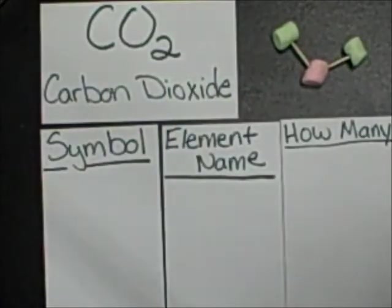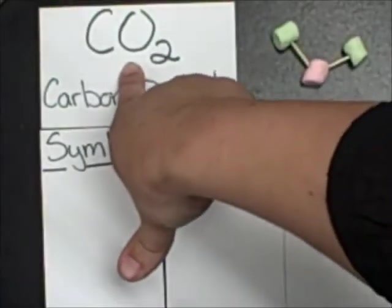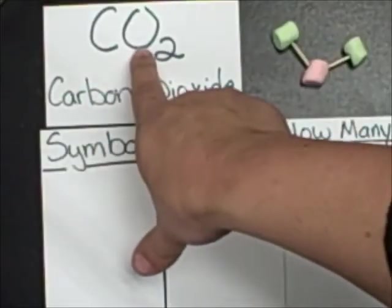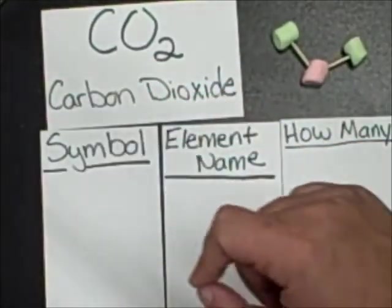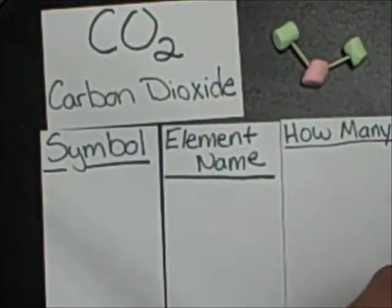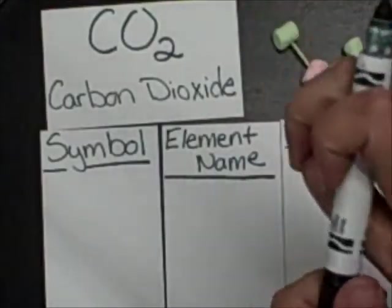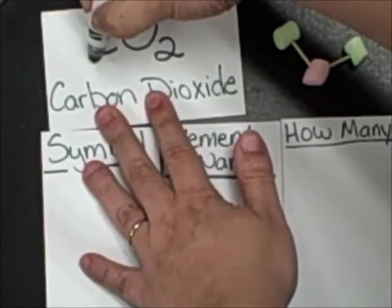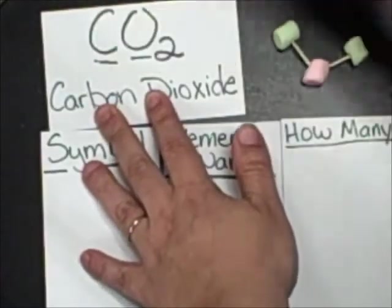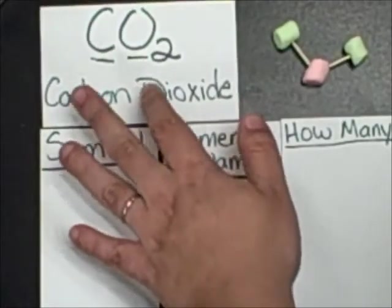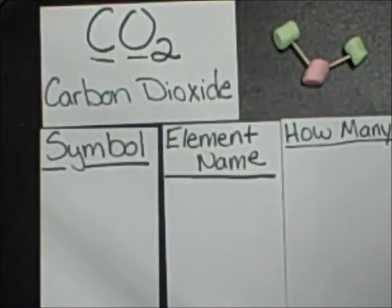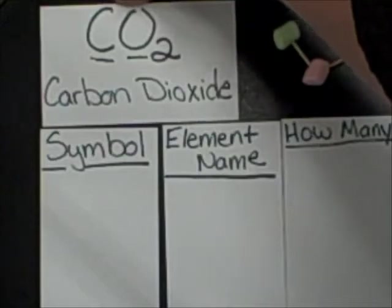First off, we need to look at the molecular formula here, CO2. And every time you see a new capital letter, that's a new atom in that compound. So I see one, two capital letters. That means I have two different types of atoms in a molecule of CO2.